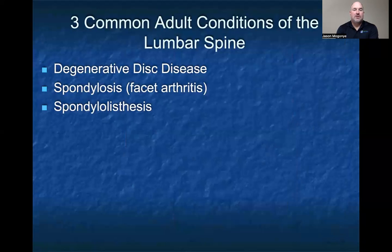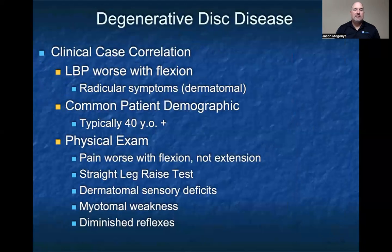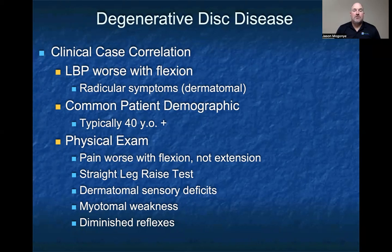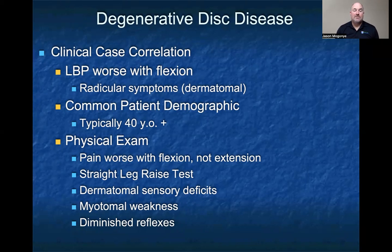Let's talk about three common adult conditions of the lumbar spine. The first is degenerative disc disease. When you have a patient you suspect has DDD, you're looking at a patient who has low back pain that's a little bit worse with flexion. They may or may not have radicular symptoms, but if they do, they should be dermatomal and correlate to the level of pain. Usually this is a patient who's 40 years old or older, although you can see younger patients with degenerative discs. On physical exam, pain is worse with flexion, not extension. If there's neuroforaminal compromise, you may have a positive straight leg raise test. Sensory deficits should be dermatomal, and weakness — which is a late and more emergent finding — should be myotomal. Diminished reflexes are also a late and more significant finding that requires quicker evaluation.